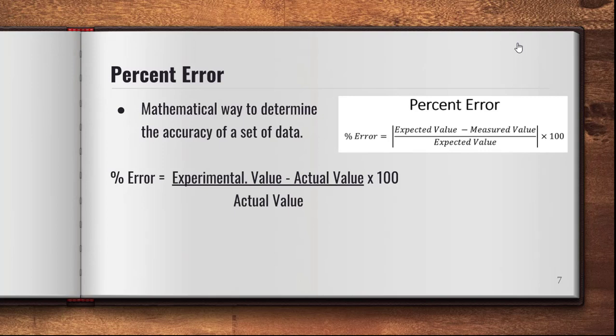Percent error is a mathematical way to determine the accuracy of a set of data. We're hoping the percent error is zero — the less error, the better. To calculate it, take the experimental value, subtract the actual value, divide by the actual value, and multiply by 100. The experimental value is what you get in performing an experiment; the actual value is what you should get.